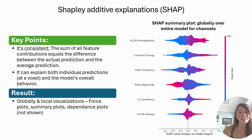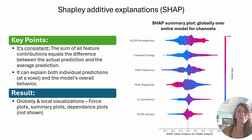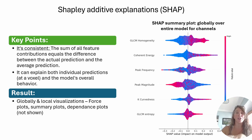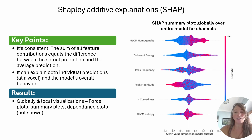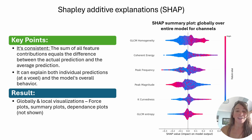What's great about SHAP, and why we've been using it a lot in the ASPE group, is that it's really consistent. Mathematically, the sum of all the features or attributes equals the difference between the actual prediction and the average prediction, so it's very consistent. It can explain behaviors both at the voxel level and at the overall model level. Here we've got a summary plot on the right-hand side — it's showing us that over your entire model, if GLCM homogeneity is high in value, it's more likely to be classified as a channel. Whereas, going down towards the bottom, low values of k-curvedness tend to be associated with facies that are not classified as a channel. I'll break this down in more detail in another video.